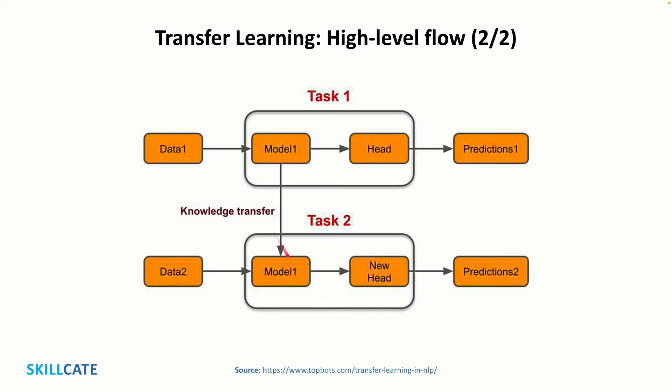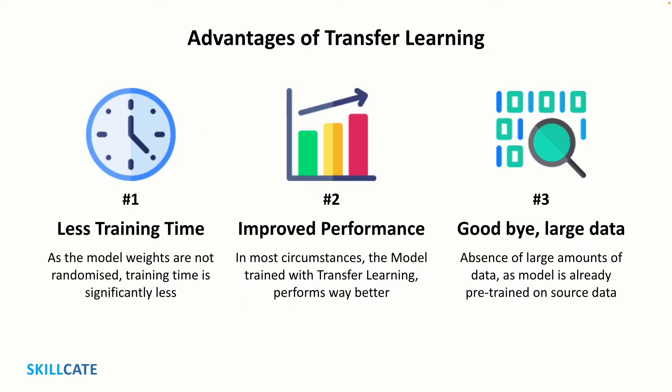This is a further simplified representation of the transfer learning architecture we have been discussing. Here, the model and the head are broken down into two separate blocks. Transfer learning offers a number of advantages, the most important of which are reduced training time, improved performance in most circumstances, and the absence of a need for a large amount of data. The best part is that a highly accurate model can be built with fairly little training data using transfer learning, as a model is already pre-trained on a huge source dataset.